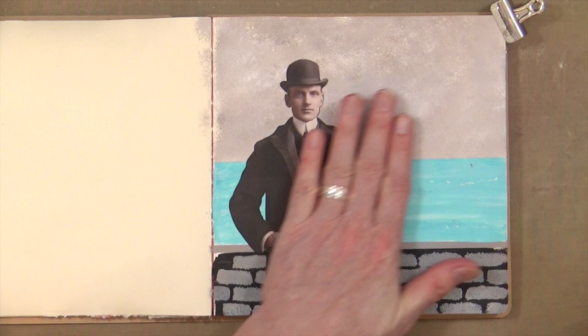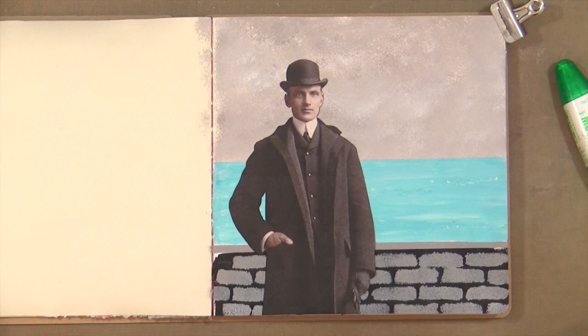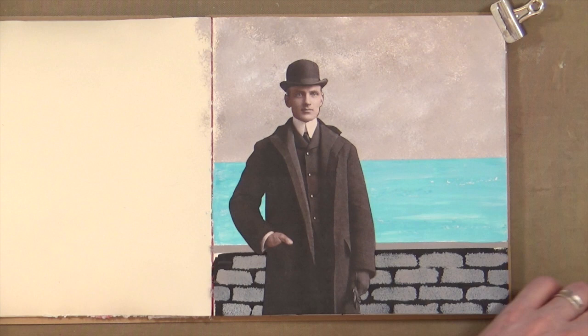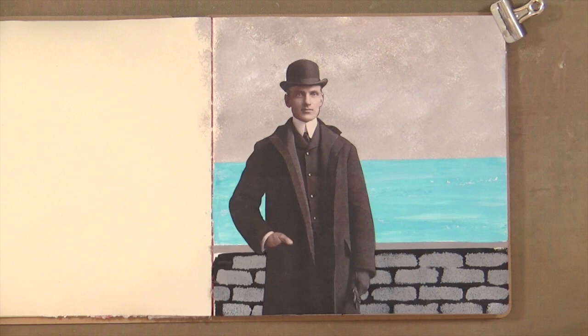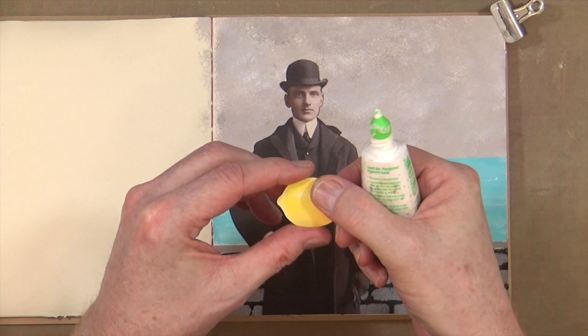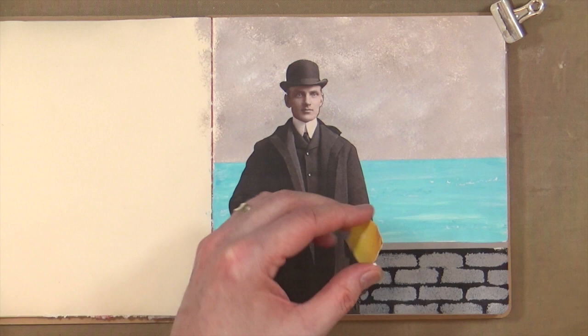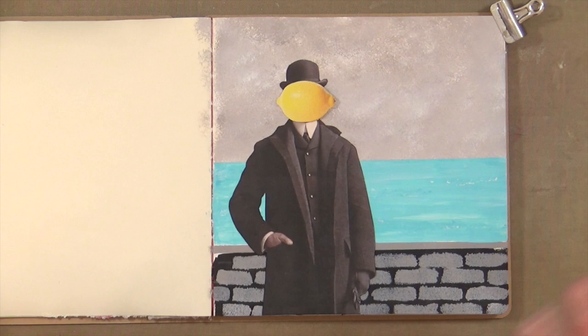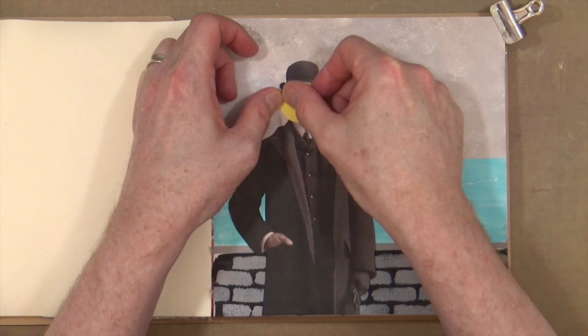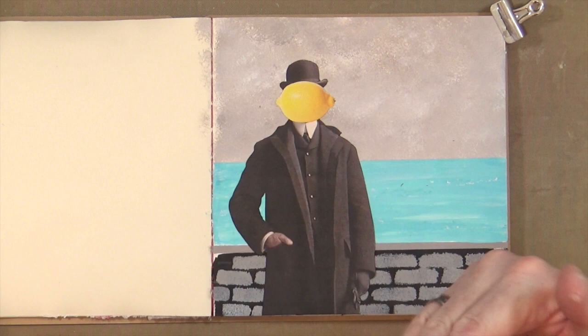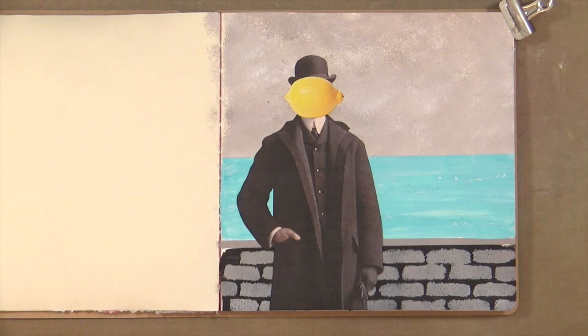And then my homage to the René Magritte picture of The Son of Man—I think that's what it's called. I've had a rest, haven't I? Instead of an apple, I've actually got a lemon that I've printed out and cut out. So I'm going to drop some glue on the back. I did say this was a homage to that painting. I'm going to just lay it so it just sits nicely on his collar, like so. Now obviously I'm aware that it's covered up his hat a little bit and doesn't quite look the part.